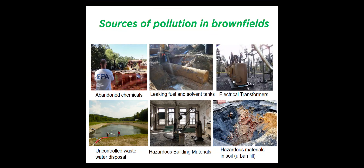Brownfield sites can have several different sources of pollution, such as abandoned drums with chemicals and waste, underground storage tanks that may leak heating oil or other solvents used in manufacturing processes, and electrical transformers that contain harmful chemicals called PCBs. It was also common that waste and wastewater was dumped in lagoons with no treatment or protection. Many brownfield buildings contain hazardous building materials such as asbestos and lead paint, and the soil underneath may be mixed with ash and other materials that contain heavy metals such as lead.